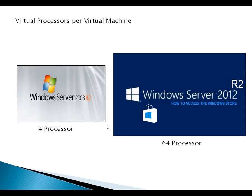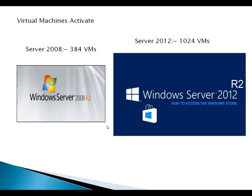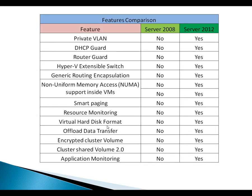If we talk about virtual machine activation, Server 2008 can activate up to three hundred and eighty-four virtual machines, while Server 2012 can support up to one thousand and twenty-four virtual machines. This is also one of the greatest features added in Server 2012 as compared to Server 2008 R2.